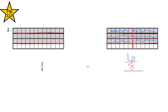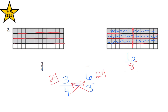Now, I want to check my work to see if these fractions are indeed equal. I'm going to write that three-fourths equals six-eighths and use the cross-multiplication method. I cross-multiply and get eight times three, which gives me 24. Then I cross-multiply the other way: four times six, which also gives me 24. Since I got 24 on both sides, three-fourths is equal to six-eighths.